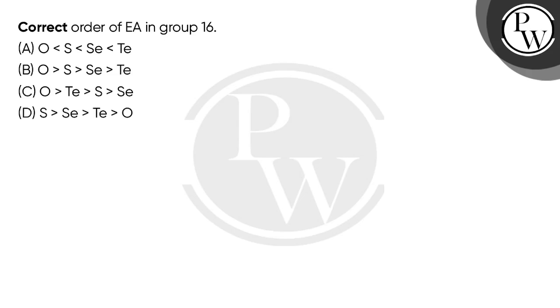Hello students, let's see this question. The question says correct order of EA in group 16. Group 16, the correct order of EA is electron affinity. Electron affinity is the amount of energy involved when you add an electron to an isolated neutral gaseous atom. When you add an electron, the nucleus and the force of attraction will cause energy to be released.